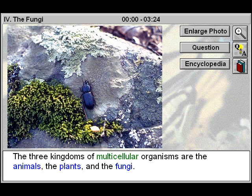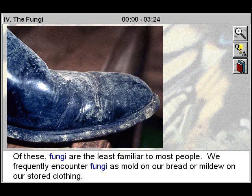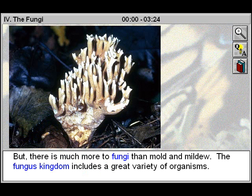The three kingdoms of multicellular organisms are the animals, the plants, and the fungi. Of these, fungi are the least familiar to most people. We frequently encounter fungi as mold on our bread or mildew on our stored clothing. But there's much more to fungi than mold and mildew — the fungus kingdom includes a great variety of organisms.